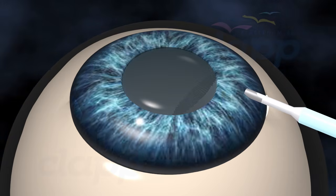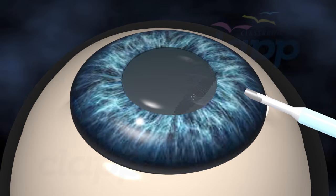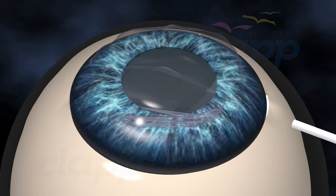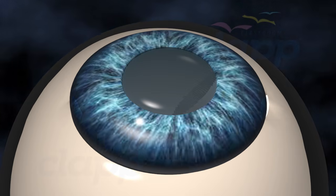Next, the surgeon applies a jelly-like transparent substance inside the anterior chamber. This will protect the interior structure of the eye during surgery.